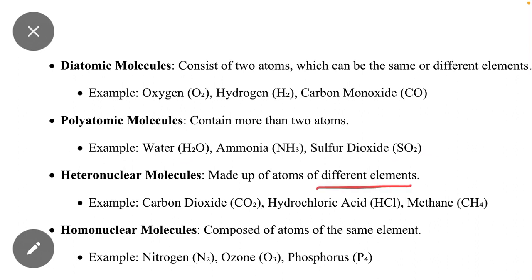Next is heteronuclear molecules, made up of atoms of different elements. In simple wording, we can say that the molecule which consists of two or three different atoms is called a heteronuclear molecule.